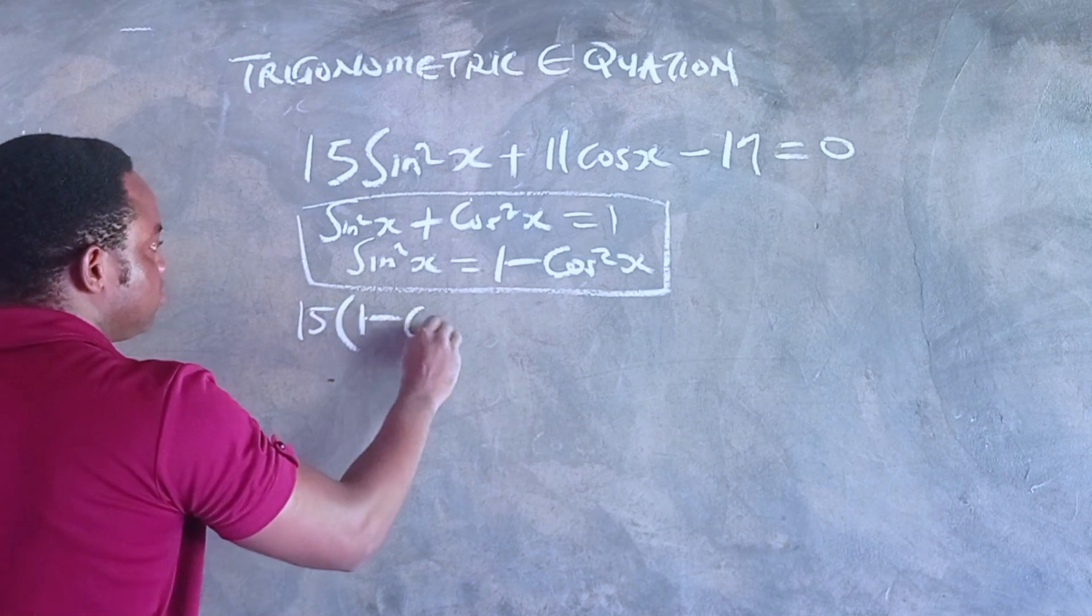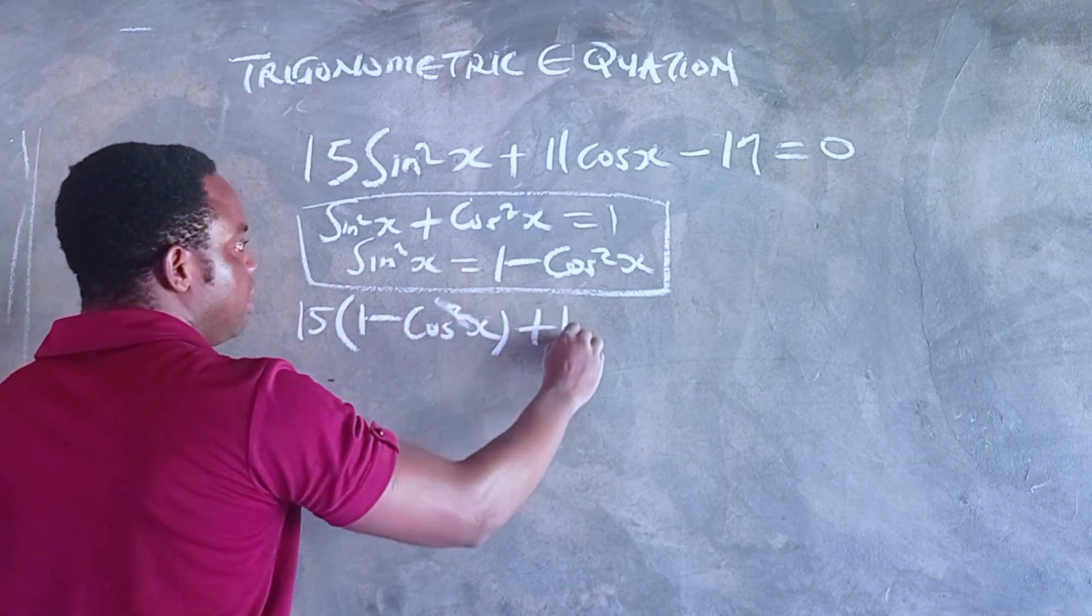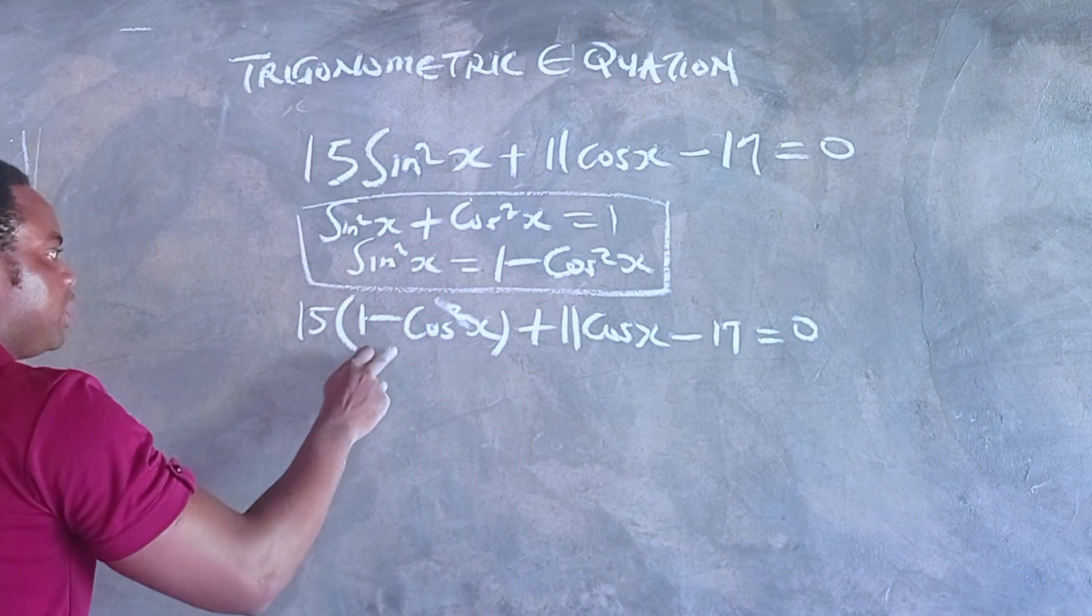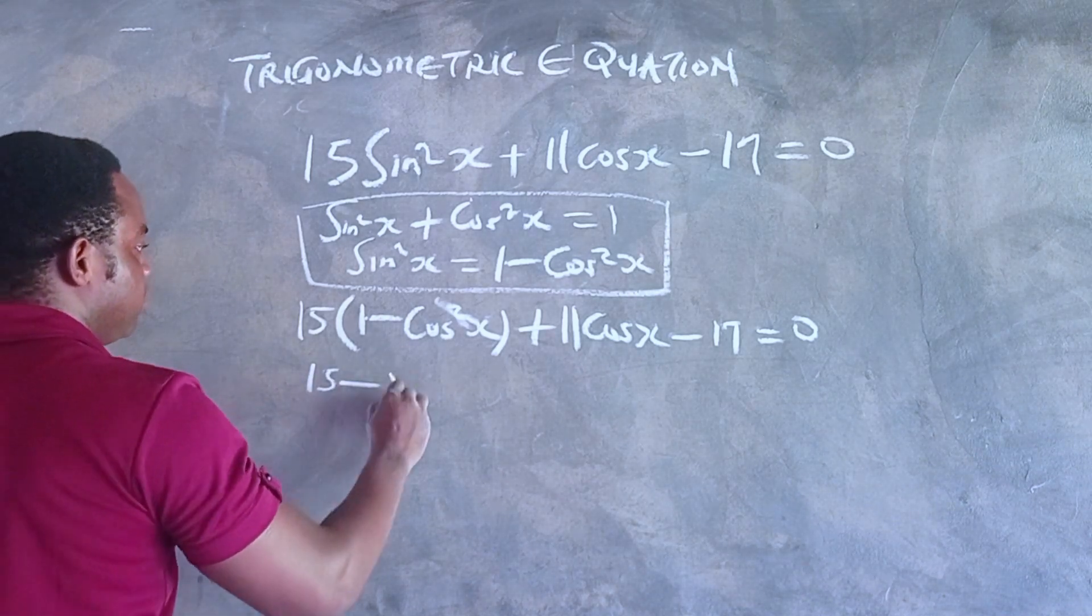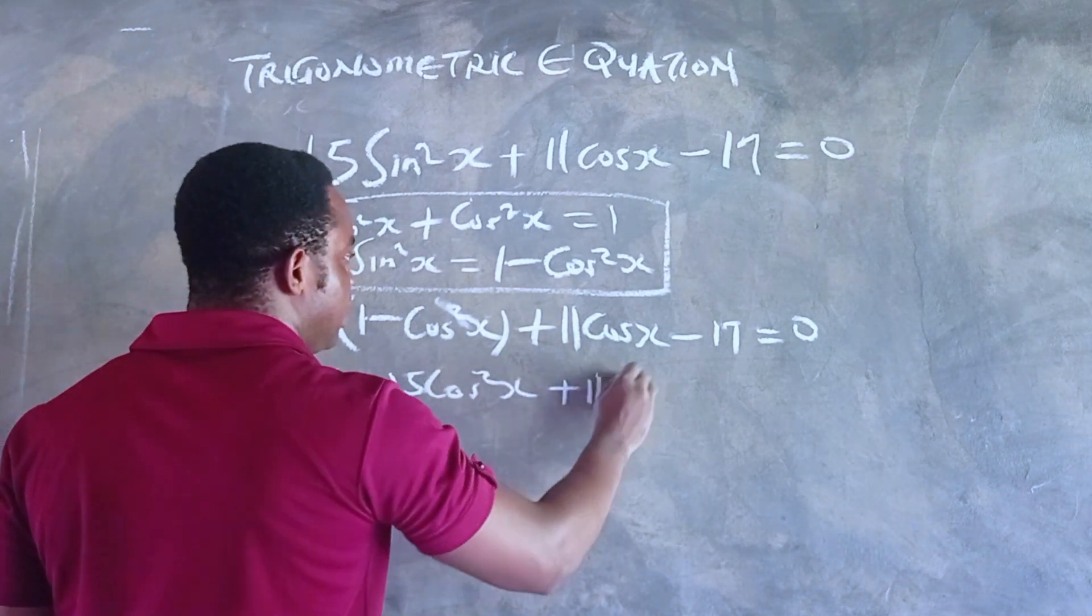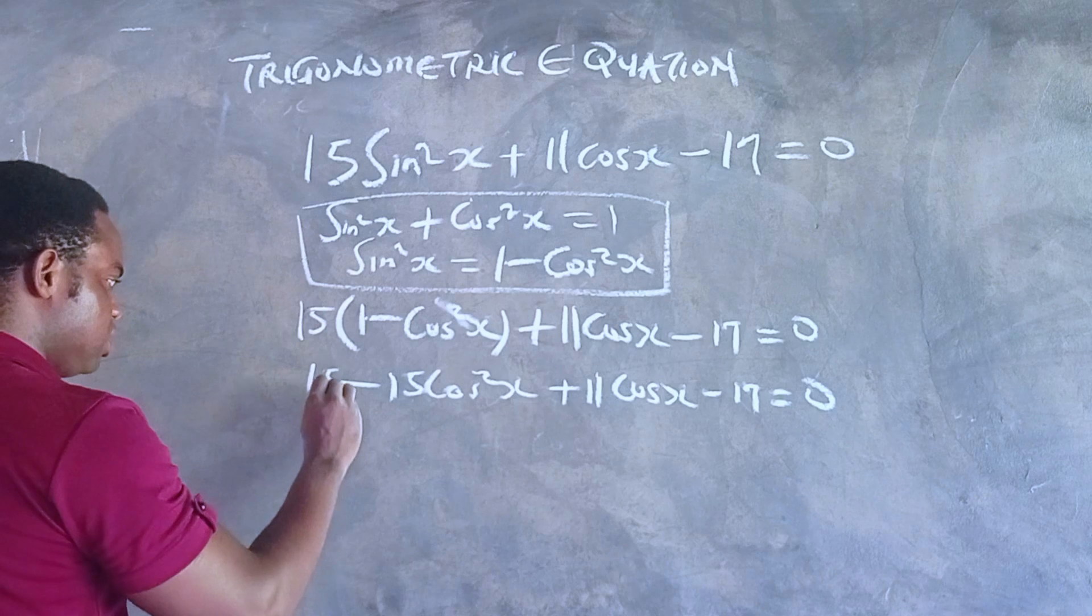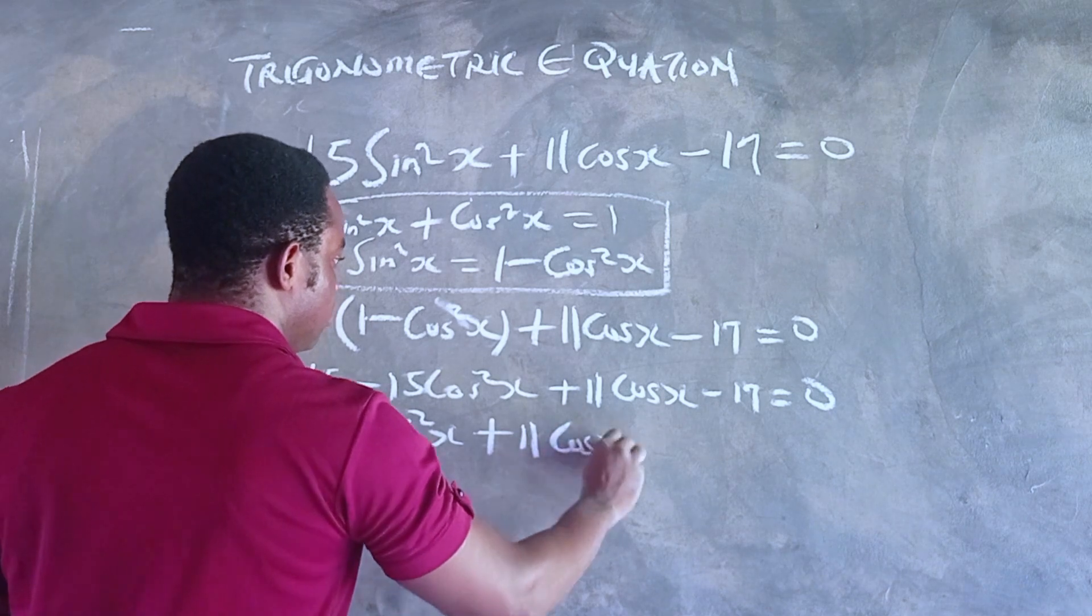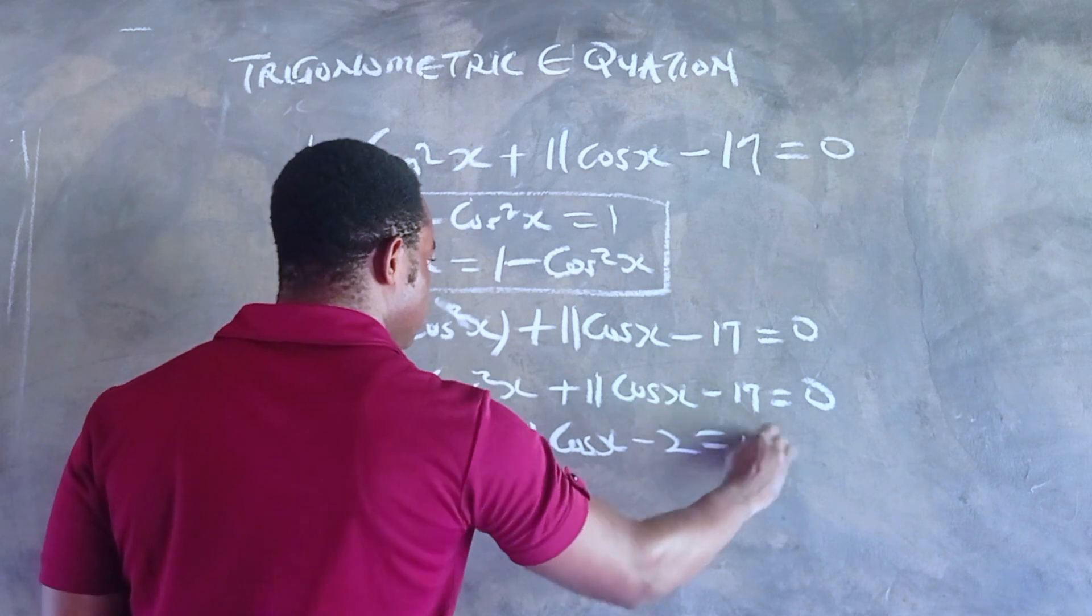We have 15(1 - cos²x) + 11cosx - 17 = 0. Let's open that bracket: 15 - 15cos²x + 11cosx - 17 = 0. This becomes -15cos²x + 11cosx - 2 = 0, since 15 - 17 is -2.